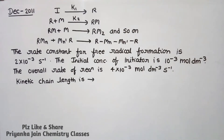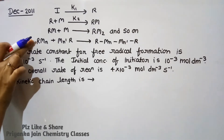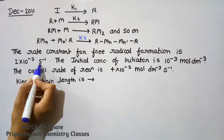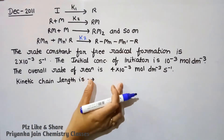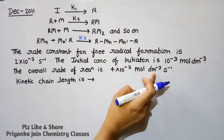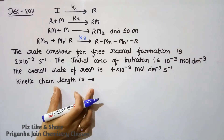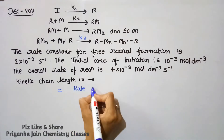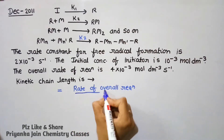From December 2011: Addition polymerization of monomer M involves the following steps. The rate constant for free radical formation is 2×10⁻³ per second, the initial concentration of initiator is 10⁻³ mol/dm³, and the overall reaction rate is 4×10⁻³ mol/dm³/s. Assuming steady-state approximation for the free radical, find the kinetic chain length. The formula is: kinetic chain length = overall rate of reaction / rate of initiation step.